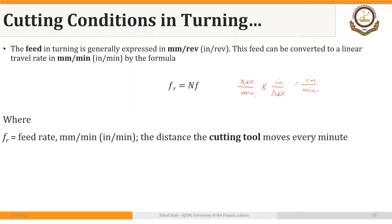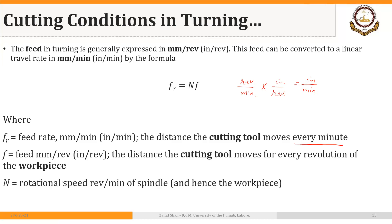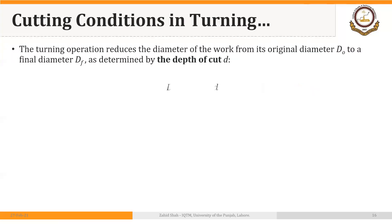Here, F subscript R is the feed rate — the distance the cutting tool moves every minute. F is the feed in millimeters per revolution or inches per revolution, and N is the rotational speed of the spindle. The turning operation reduces the diameter from the original diameter D subscript O to a final diameter D subscript F, where the depth of cut equals the difference of the two diameters divided by 2.